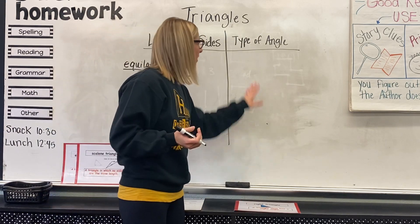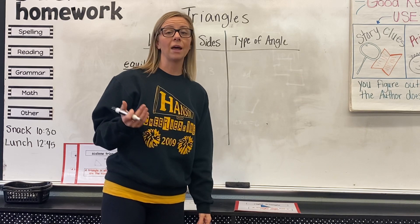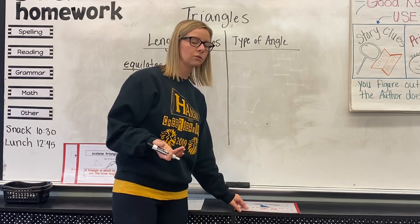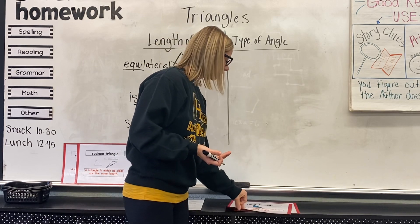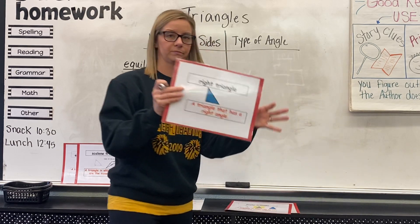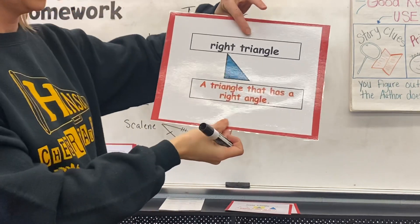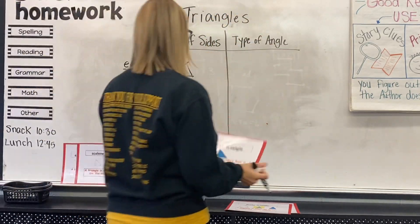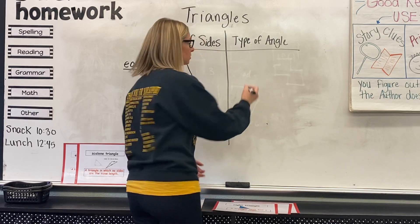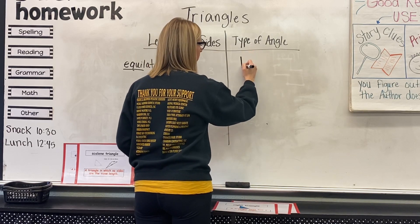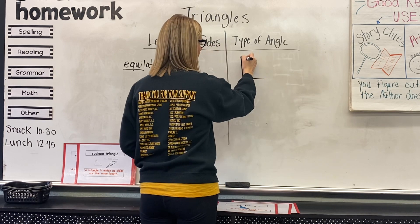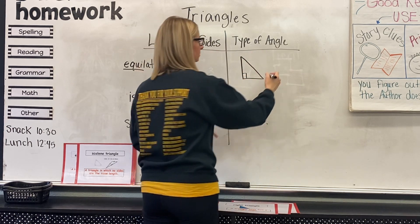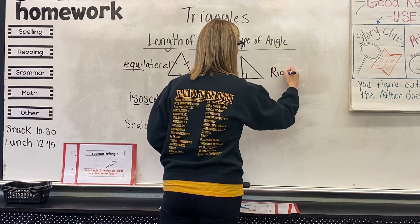Another way you can name triangles is by their types of angles. We're going to start off with a right triangle. A right triangle has a right angle. When we draw these triangles, we might want to start off by drawing a right angle and then connecting. So if it has a right angle, then it is a right triangle.